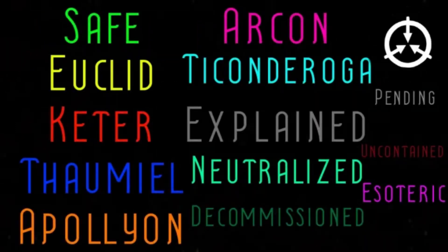A good way to remember all the classes is by using the locked box analogy. For example, if you lock an SCP in a box, leave it alone, and nothing bad will happen, it is Safe. If you lock it in a box, leave it alone, and you're not too sure what will happen, then it is probably Euclid. If you lock it in a box, leave it alone, and it easily escapes, then it is Keter.